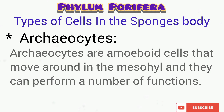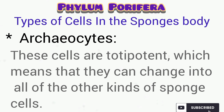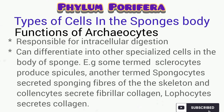The other type of cell we're going to talk about is the archaeocyte, which are actually amoeboid cells that move around the mesohyl. They are totipotent, which means that they can transform or change into other types of cells and can carry out a number of various functions. The functions of the archaeocytes include the fact that they carry out intracellular digestion — that is, digestion within the cell — by engulfing food particles through a process called phagocytosis.